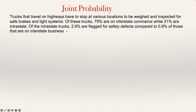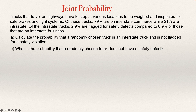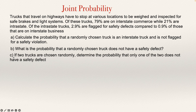So this is the information of the problem. With this information, I need to answer these questions. First, calculate the probability that a randomly chosen truck is an interstate truck and is not flagged for a safety violation. Second, what is the probability that a randomly chosen truck does not have a safety defect? And C, if two trucks are chosen randomly, determine the probability that only one of the two does not have a safety defect.